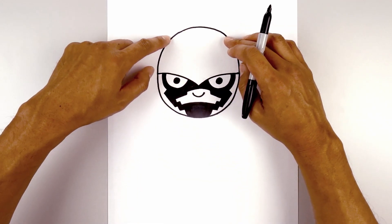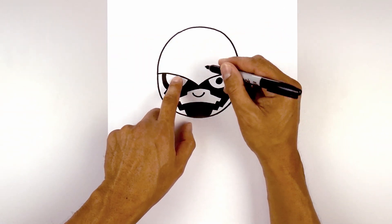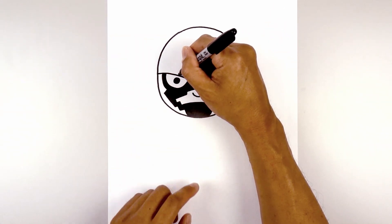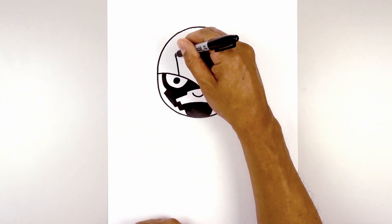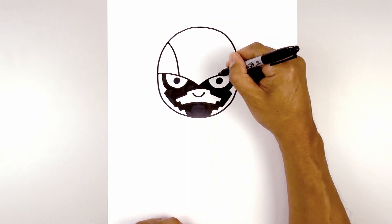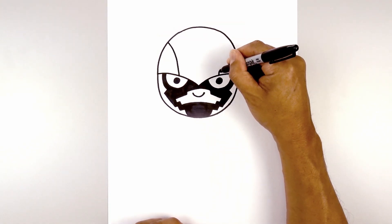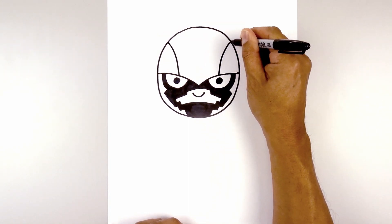Let's add a trim on either side of the head, directly above the left pupil, on top of this curve, go up and then out. We'll do the same thing on the right, curving up then out.